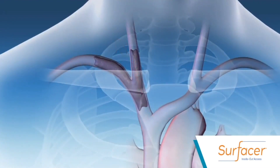A sheath is advanced over an 0.035 guide wire to the venous obstruction. It is the conduit for all instruments used during the procedure.